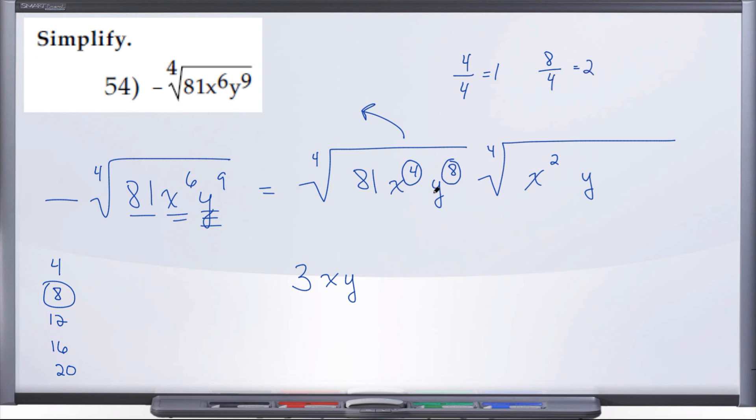So when y comes out of the radical, it comes out as y squared. And now that everything has come out of the good stuff radical, we simply rewrite the bad stuff radical. And of course, don't forget the original problem had a negative out front, so our final answer is going to stick that negative on.